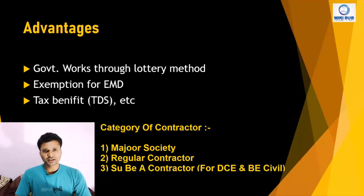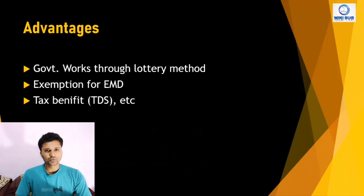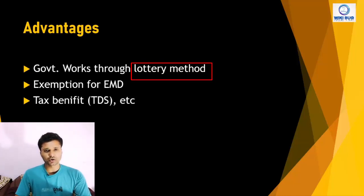If you are an educated unemployed engineer registered after Diploma or Degree, what are your advantages? First, there will be Government Works allocated by the Lottery method. The Lottery method means that educated and unemployed engineers are all invited and without any tendering process they get the work allocated. That is the Lottery method.